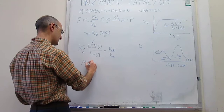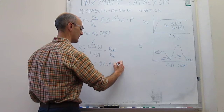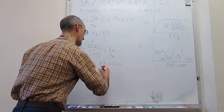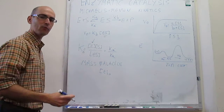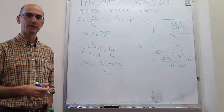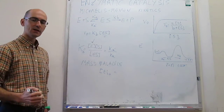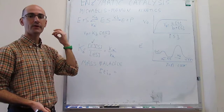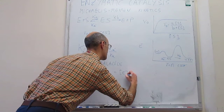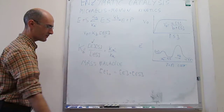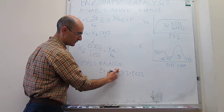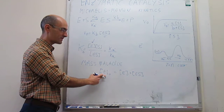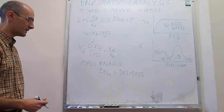The mass balance of the enzyme is an expression that compares the enzyme concentrations at the start of the reaction and after the reaction has started. At the start of the reaction, we have a constant concentration of enzyme we initially placed in the system. After the reaction has started, the enzyme can only be in two places: as free enzyme or as part of the enzyme-substrate complex. So: E_total = [E] + [ES]. Rearranging, the concentration of free enzyme equals E_0 minus [ES].